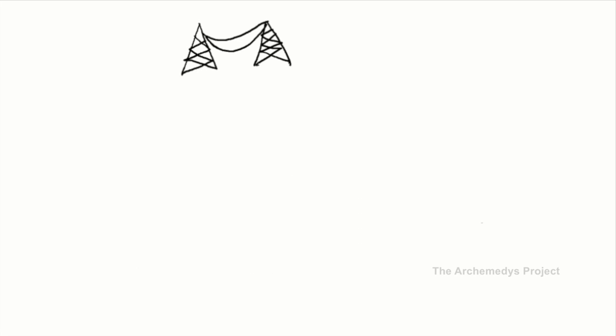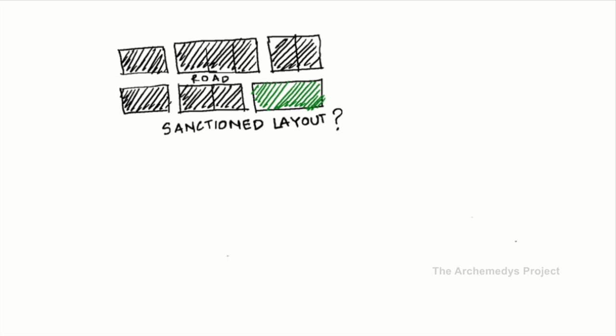Focus on infrastructure and amenities. Does the plot have metal roads? Have a checklist of civil amenities like drinking water, electricity, underground drainage, internet facilities, pipe gas connection, and security. It is important to verify if your house has sanctioned layout, which comes handy if you are applying for house loans while building your house later.